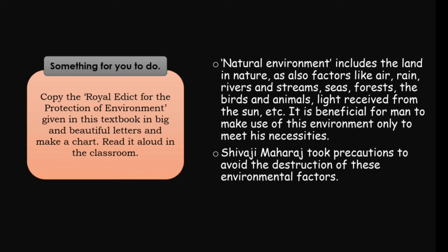Write about the environment in the textbook in big and beautiful letters and make a chart. Read it aloud in the classroom or at home. Natural environment includes the land and nature, and also factors like air, rain, rivers and streams, sea, forests, birds, animals, and light received from the sun. It is beneficial for man. We should make use of this environment only to meet our necessities.